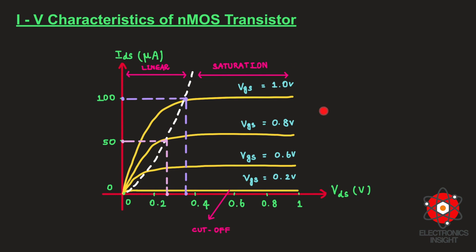The IV characteristics graph of the NMOS transistor shows three regions: cutoff, linear, and saturation. In the cutoff region (VGS < VT), current is zero. For higher gate voltages, current increases linearly with VDS for small VDS values (linear region). As VDS reaches the saturation point (VDS = VGS − VT), the current becomes completely independent of VDS.